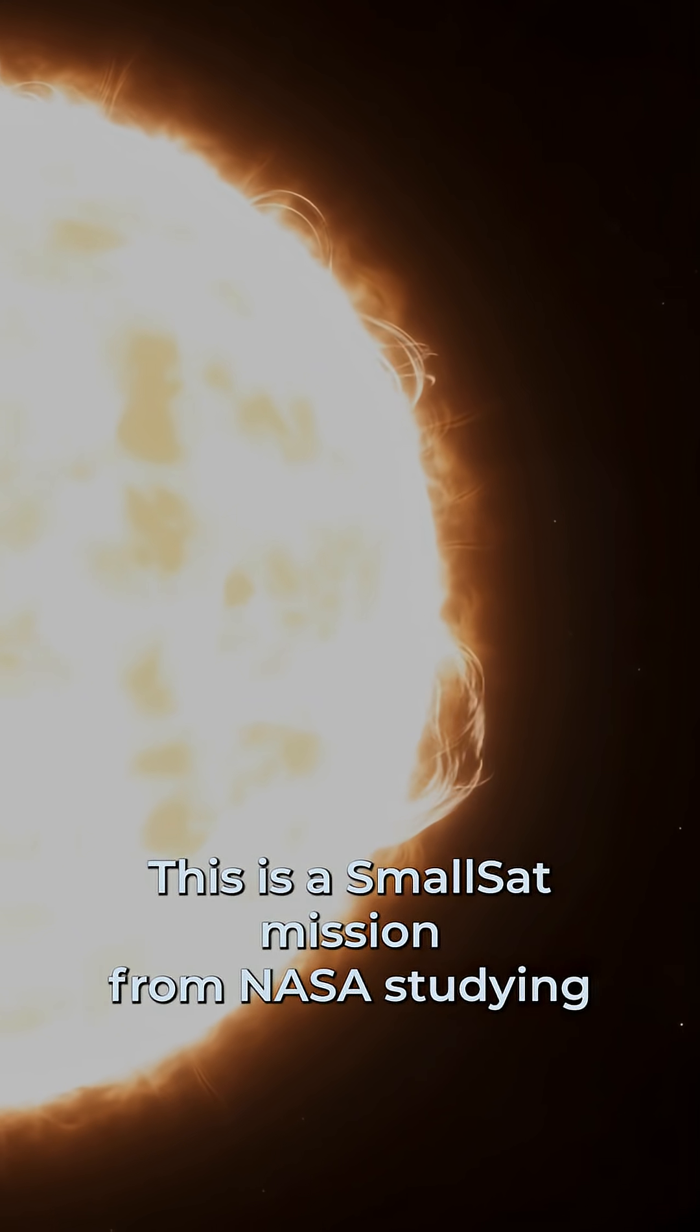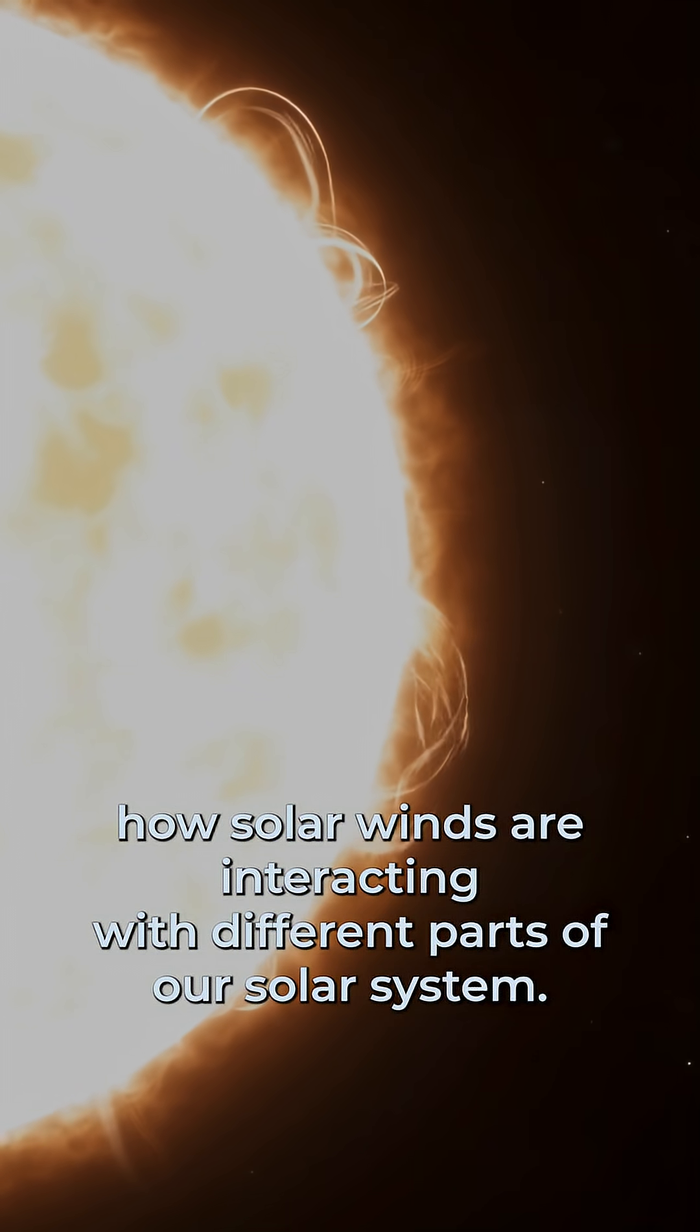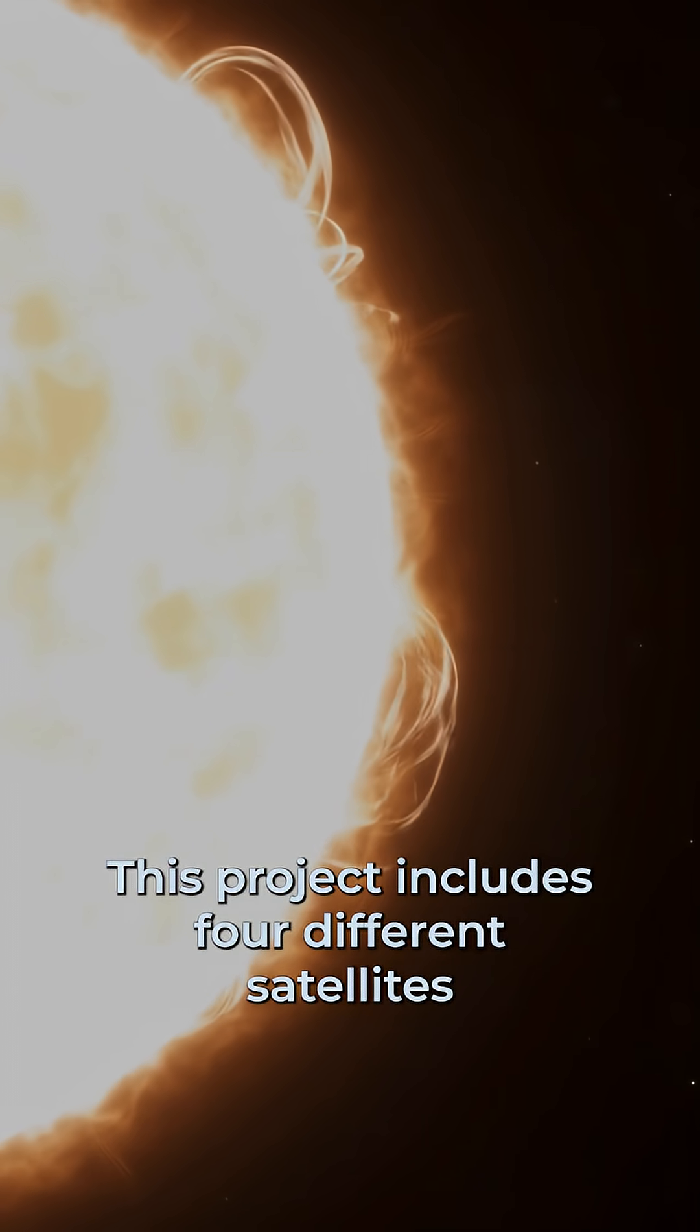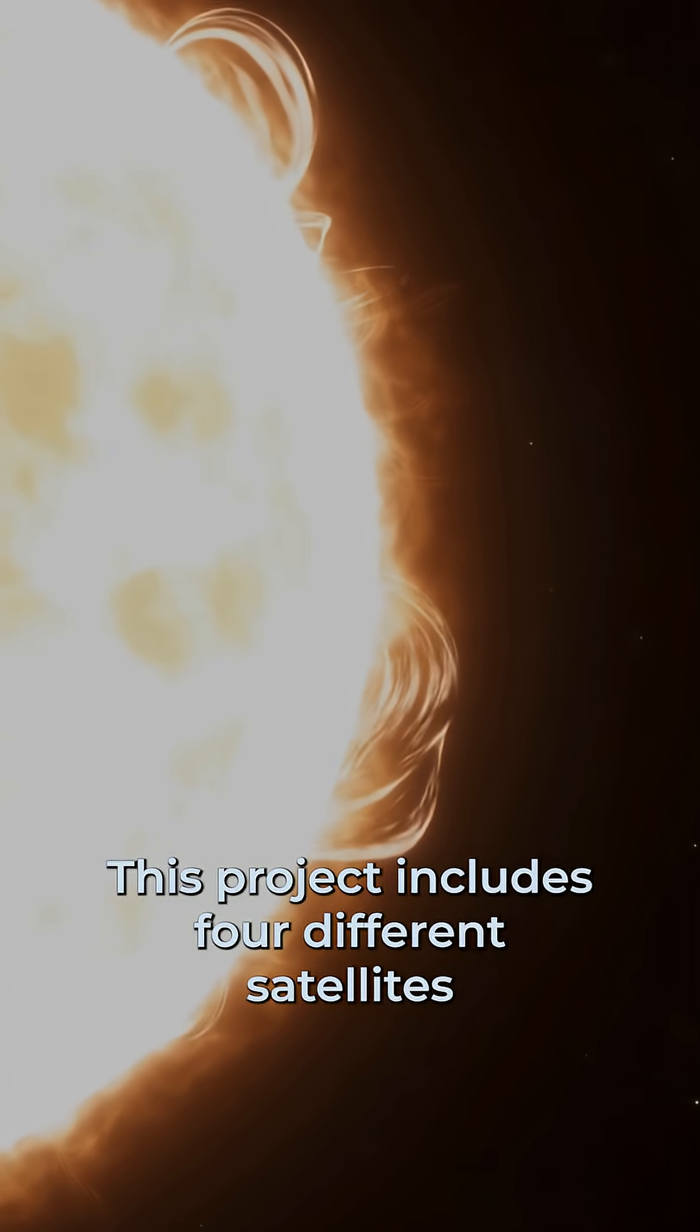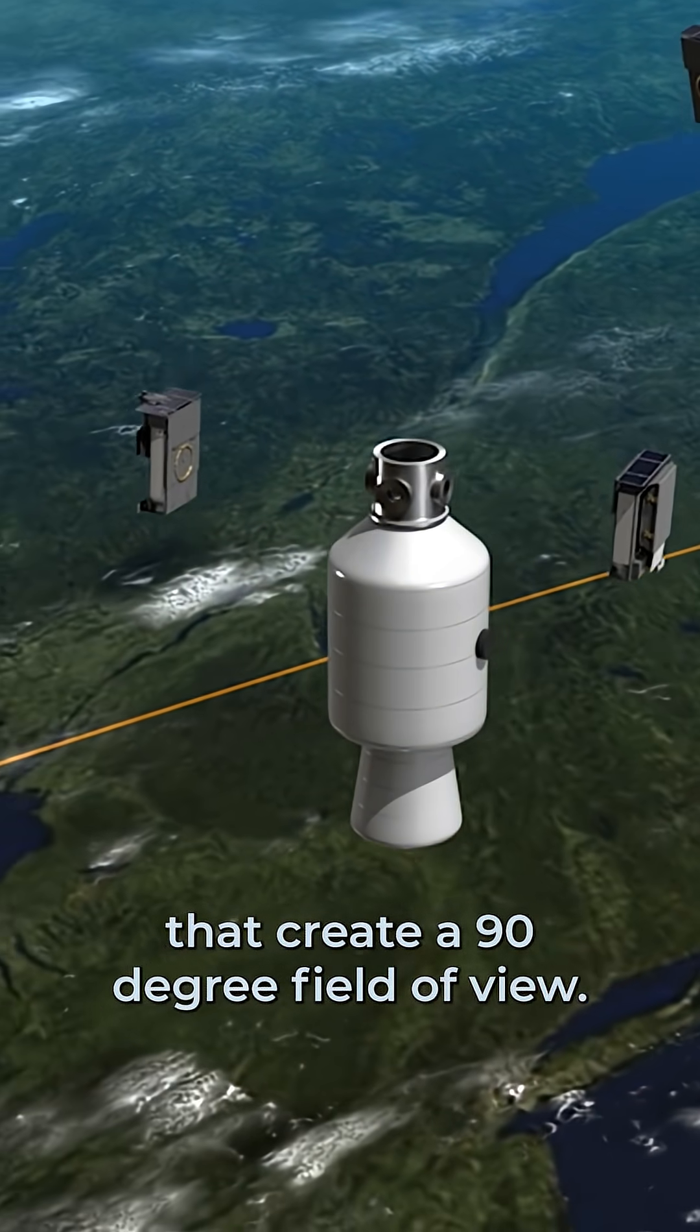This is a SmallSat mission from NASA studying how solar winds are interacting with different parts of our solar system. This project includes four different satellites that create a 90-degree field of view.